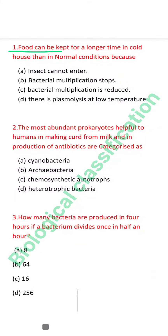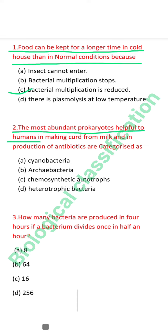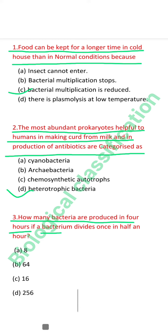Food can be kept for a longer time in cold conditions than normal. A protocol is helpful to women in making curd from milk, and the production of antibiotics are categorized as such. How many bacteria are produced in four hours if a bacterium divides once every half hour? Option D.